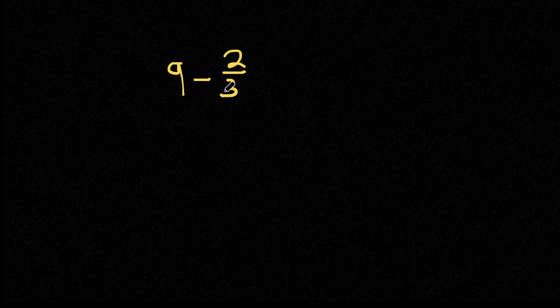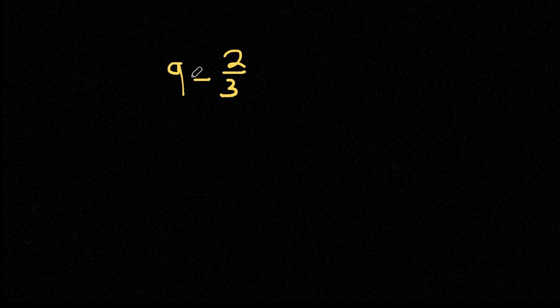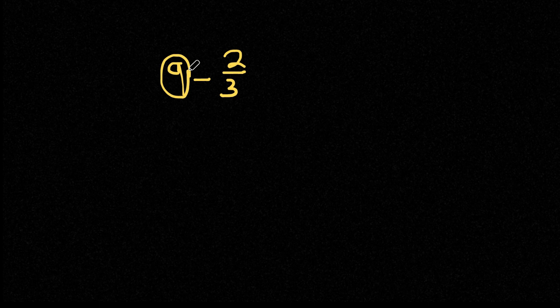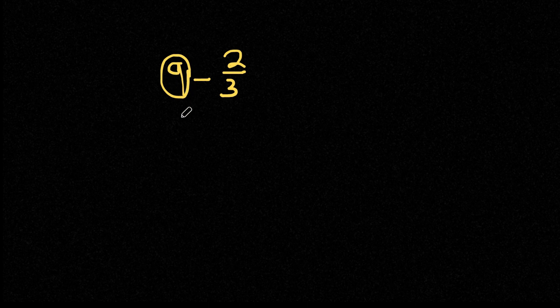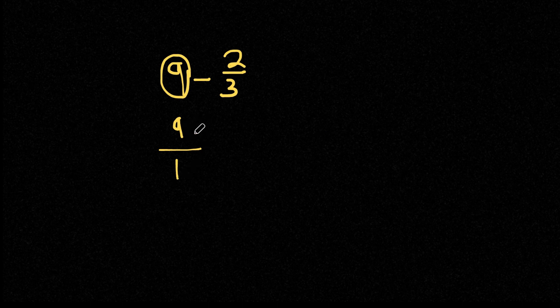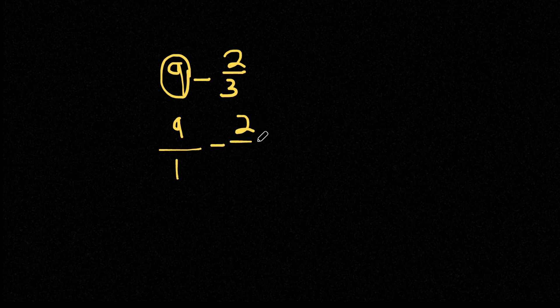So right here, we have our problem 9 minus 2 thirds. And similar to adding a whole number with a fraction, our first step is to convert our whole number here, which in this case is 9, to a fraction. Any whole number in its fraction form is simply it over 1. So 9 in this case is going to be 9 divided by 1, and we're going to subtract this with 2 thirds.